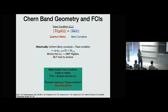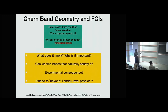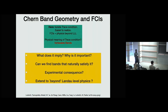What we'll try to do is introduce a different-looking condition which is much more physical. We'll eventually show it's the same as the trace condition, and we'll call that other condition vortexability — a band that has that condition will be called a vortexable band. Most of this talk will be about discussing this condition: understanding its physical meaning, why it's important to realizing FCIs, whether we can find bands that naturally have it, then talking about experiments, and finally going beyond Landau level physics.